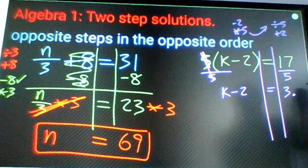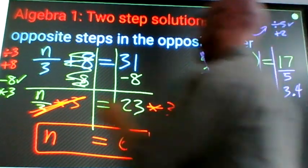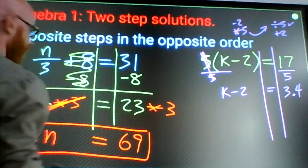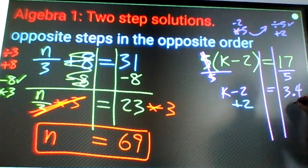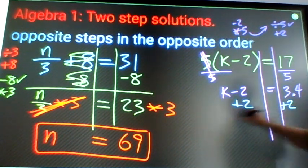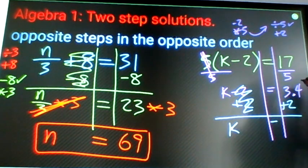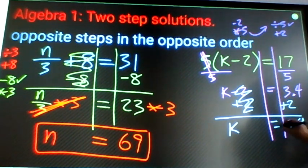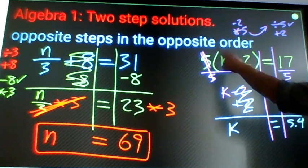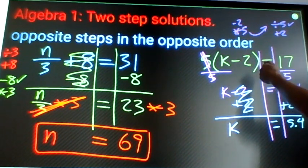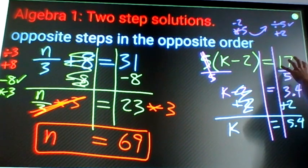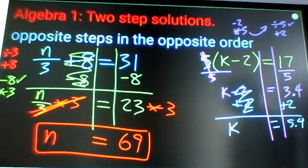3.4, all right. Now took care of my 5, take care of my 2. Undo minus 2 by adding 2 here, add 2 here to keep the balance. Minus 2 plus 2 cancel, k equals 5.4. And again I can take a calculator, check this: 5 times (5.4 minus 2), enter, I should come out with 17. If I don't then I know I made a mistake and I need to check my work.